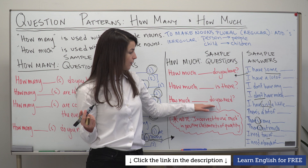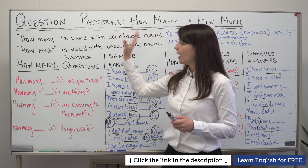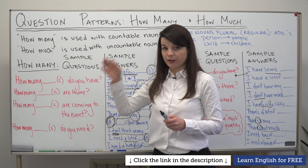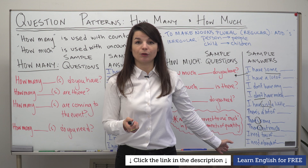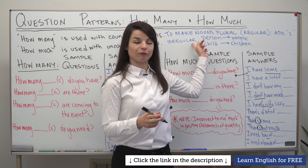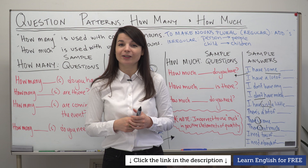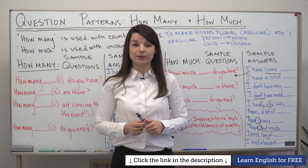So those are a lot of patterns. The key point to remember: 'how many' plus the plural form of the noun is used for countable nouns, and 'how much' plus the regular form of the uncountable noun is used for uncountable nouns. Also watch out for irregular countable noun forms. If you have questions or want to try making an example sentence, please do so in the comments. Thanks very much for watching, and I'll see you again soon!